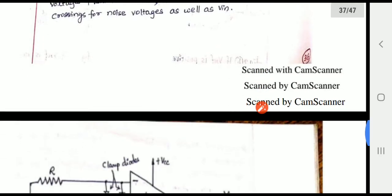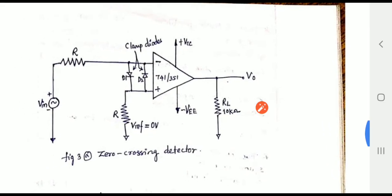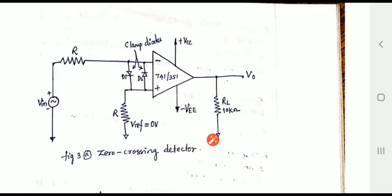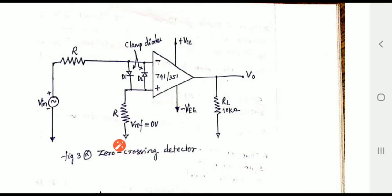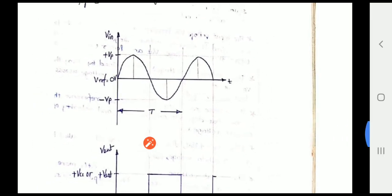This can be shown in the circuit diagram. In this circuit, the input is connected to the inverting terminal, hence it is called the inverting configuration of the zero crossing detector. The reference voltage is connected to the positive terminal and is set to zero volts.